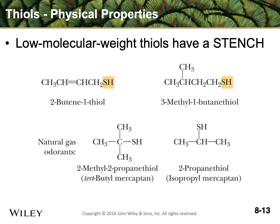Now let's move to thiols. Thiols have some interesting properties, most notably their stench — they are extremely sensitive to our noses and we can detect them at parts per billion. The 2-methylpropyl thiol (t-butyl mercaptan) and 2-propanethiol (isopropyl mercaptan) are used as odorants in natural gas. Natural gas has no odor on its own, so these compounds are added so we can detect a leak and prevent a dangerous buildup of hydrocarbons that could explode.